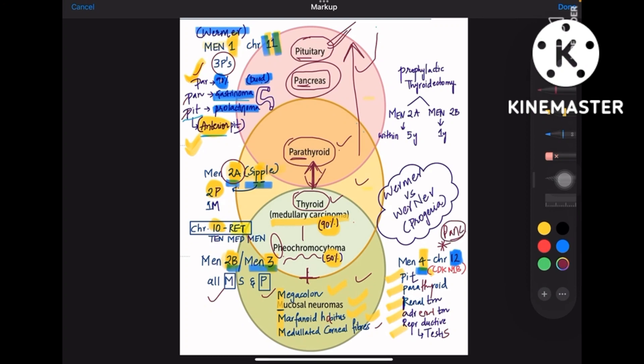So in MEN4 you have to skip pancreas. Pancreas has only importance in MEN1 syndrome. Now there is one more point that you need to remember regarding prophylactic thyroidectomy.